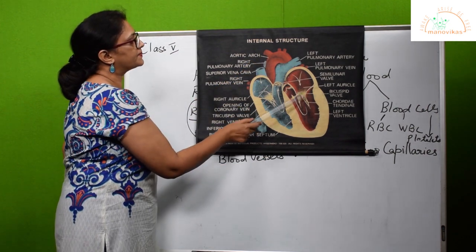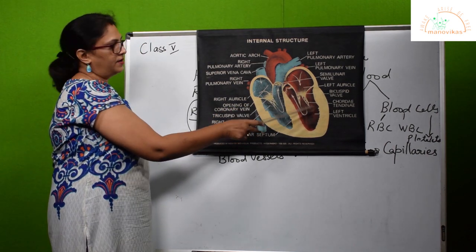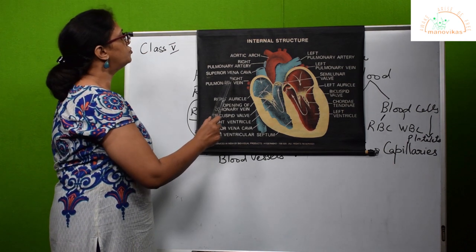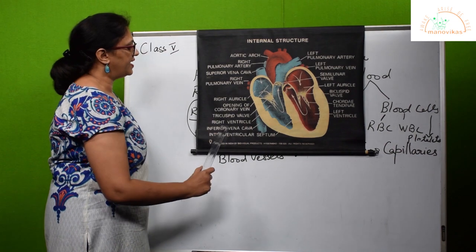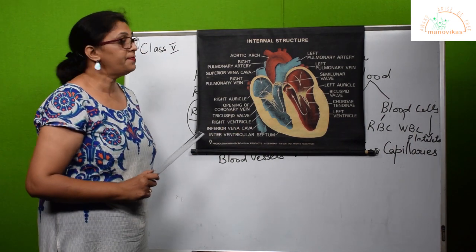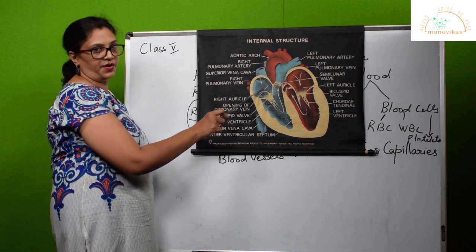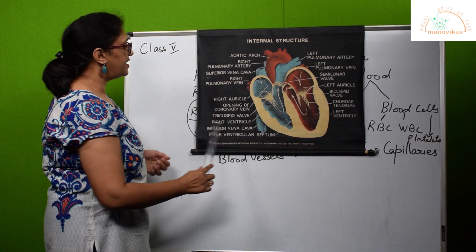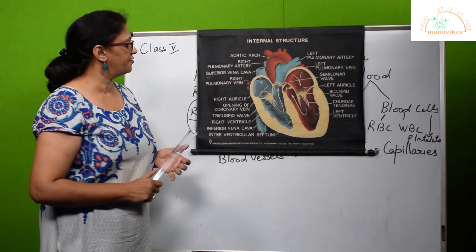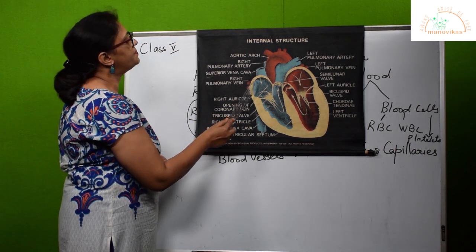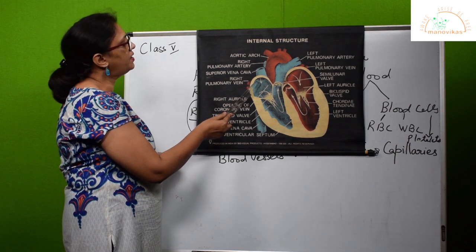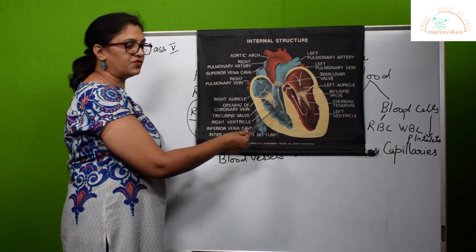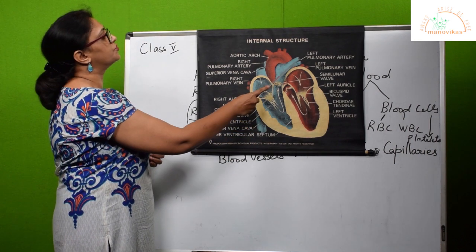From the aorta, the different arteries take the pure blood to the rest of the body. That is what the left side of the heart does. Now the veins carry the impure blood from the different parts of the body through two veins — the superior vena cava and the inferior vena cava. These two veins bring the impure blood into the right auricle. From the right auricle, it moves into the right ventricle. From the right ventricle, the deoxygenated blood — blood now rich in carbon dioxide — moves to the pulmonary artery.